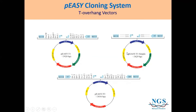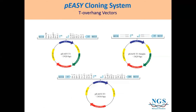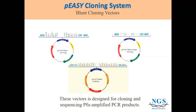The second type of vector is the blunt cloning vector. The previous one was the sticky end; this one is the blunt end. We have PEZ Blunt, PEZ Blunt Simple, and PEZ Blunt Trait. They also differ in their RE sites. The blunt EZ vector is designed for cloning and sequencing Pfu-amplified PCR products, whereas the T-overhang vector is designed for Taq PCR products.